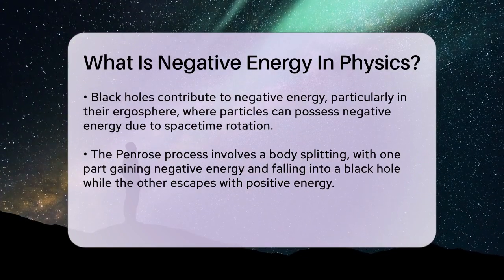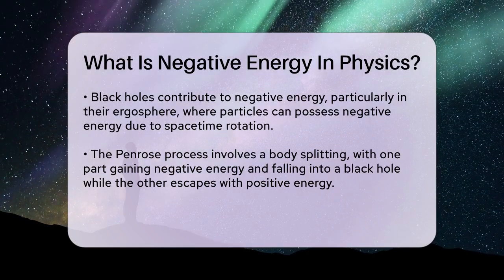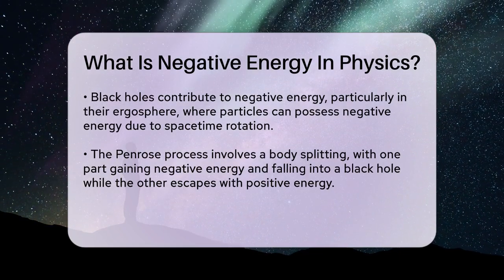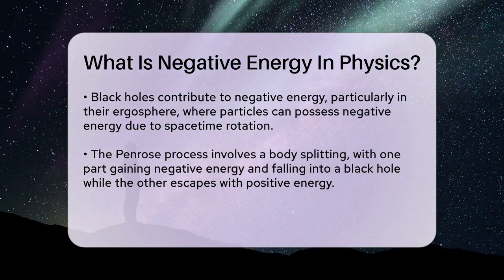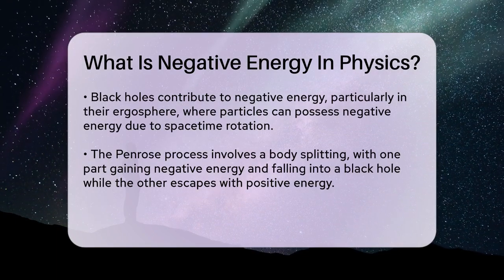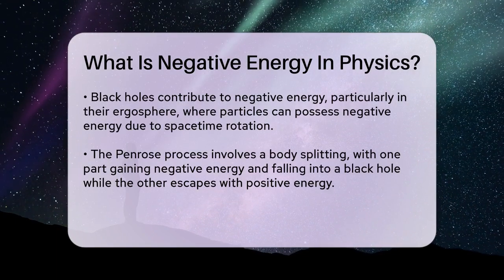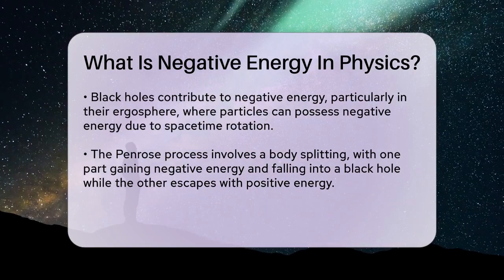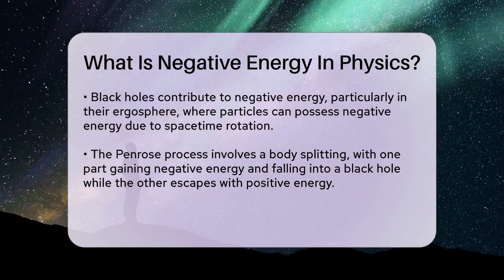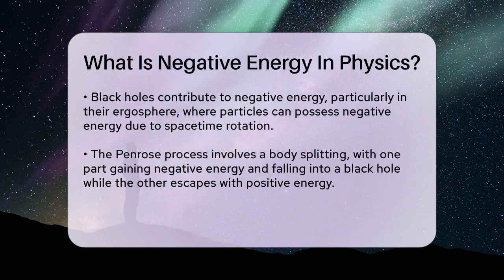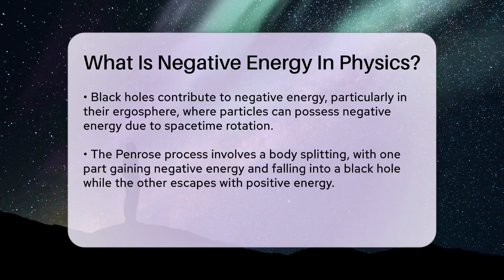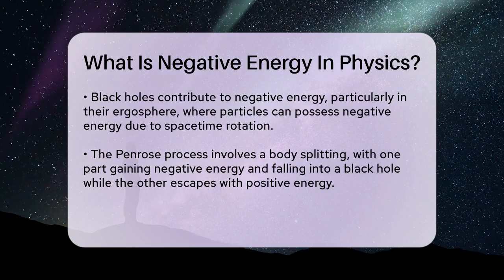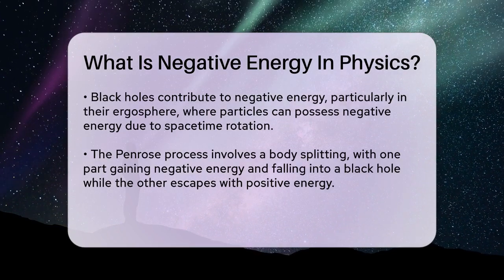Hawking radiation is another phenomenon where negative energy is key. Virtual particles near a black hole's event horizon can become real if one particle falls into the black hole with negative energy, while the other escapes as radiation. This process slowly reduces the black hole's mass over time.